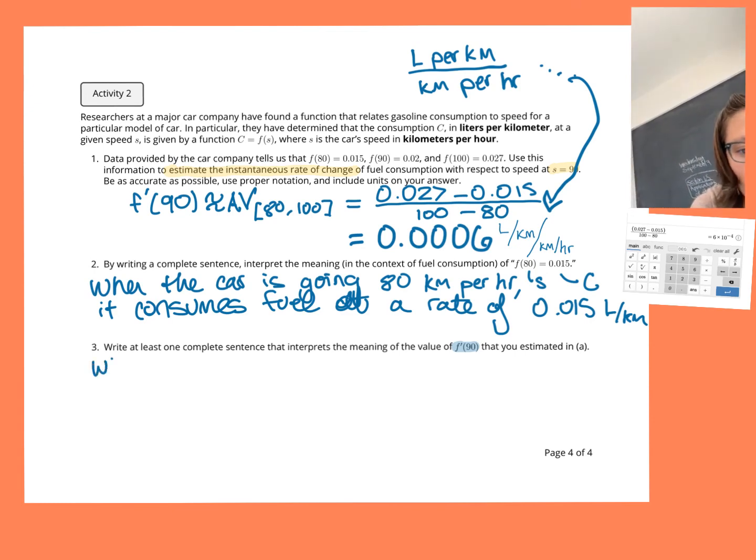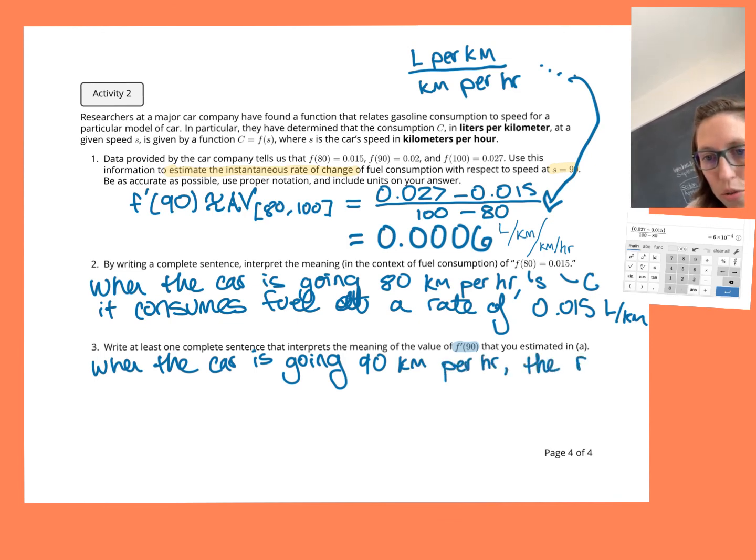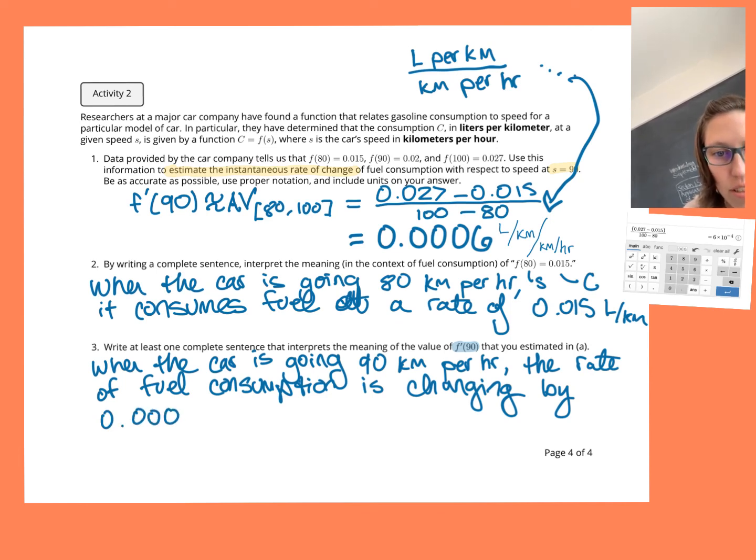So when the car is going, traveling, being operated at, going 90 kilometers per hour, going 90 kilometers per hour, the rate of fuel consumption is changing by 0.0006 liters per kilometer per kilometer per hour.